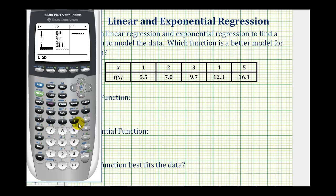Now we can perform the regression. We'll start with linear regression. So we'll press the stat key, right arrow once to calculations, and then option four is linear regression. Notice a will be the slope and b will be the y-intercept. So I'll press the number four and then press enter again.